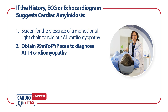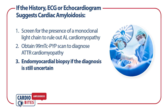AL cardiomyopathy can cause a false positive PYP scan, so it is important to rule out AL amyloidosis before obtaining a PYP scan. In some instances, such as concern for simultaneous AL and ATTR cardiomyopathy, or an equivocal PYP scan, endomyocardial biopsy may be required for diagnosis.